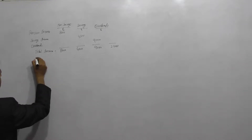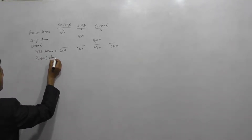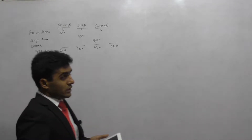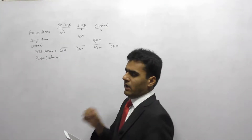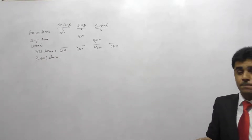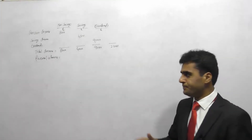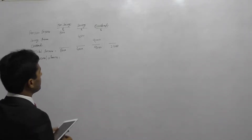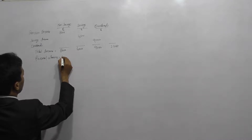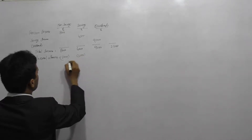Next, we deduct the personal allowance. The normal way is to deduct it first from the non-savings income, then from the savings income, and finally if anything is left, from the dividend income. Following this normal method, we deduct eight thousand pounds from the non-savings income and three thousand pounds from the savings income.